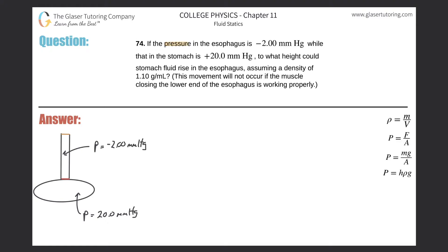Number 74, if the pressure in the esophagus is negative 2 millimeters of mercury, while that in the stomach is positive 20 millimeters of mercury, to what height could a stomach fluid rise in the esophagus, assuming a density of 1.1 grams per milliliter?